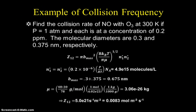As an example, if we want to find the collision rate of NO with O3 at 300 Kelvin, a pressure of 1 atmosphere, and at a concentration of 0.2 ppm, the molecular diameters are given as 0.3 and 0.375 nanometers. Sorry, those should be radii. That's the only thing that makes sense according to what happens later in the problem. To make that calculation, we just apply the formula that we have, π b_max² times all these quantities.